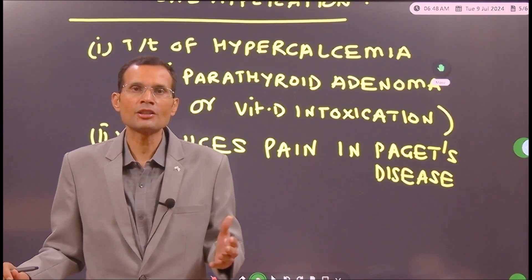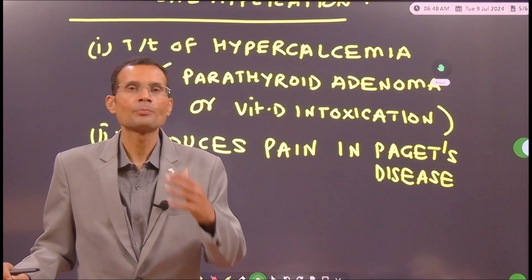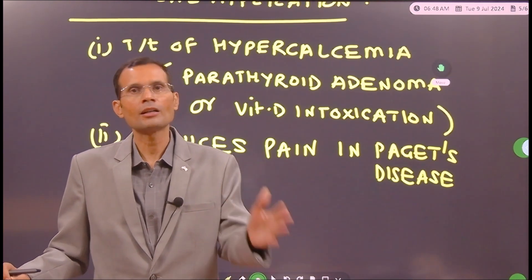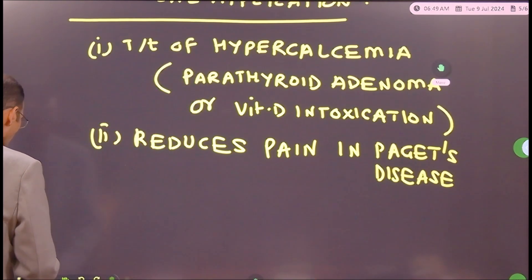The other important role that it can have possibly is in Paget's disease of the bone. It is a painful condition of the bone and this is where calcitonin can be administered. It reduces the pain associated with Paget's disease. So that is the clinical application or significance of this hormone.